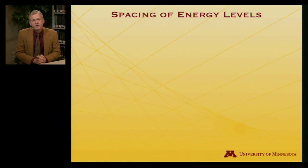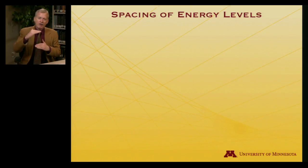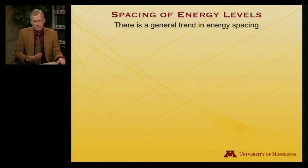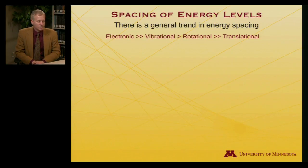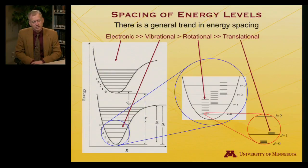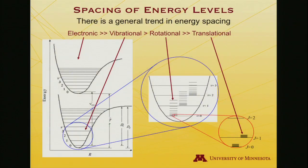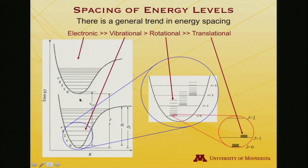What's important to appreciate is the spacing of these energy levels — how far apart they are — because that matters for how you can store energy in a system. There is a general trend: the electronic energy spacing is much, much greater than the vibrational spacing, which itself is greater than rotational, which is much, much greater than translational. A plot of two electronic states illustrates this — the ground state and an excited electronic state are separated by a large amount of energy relative to everything else.